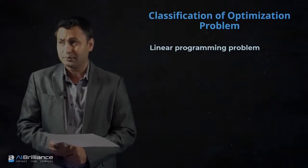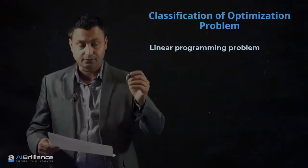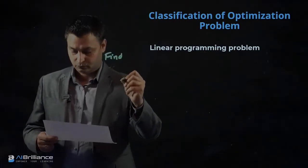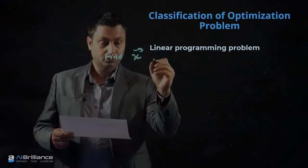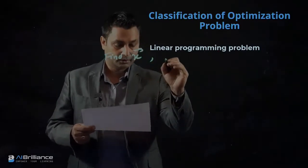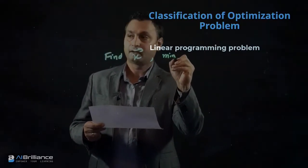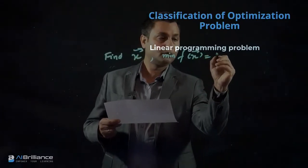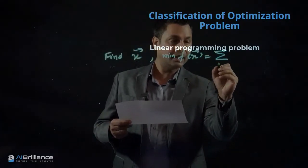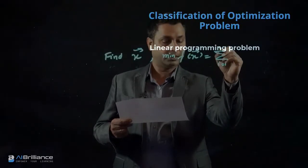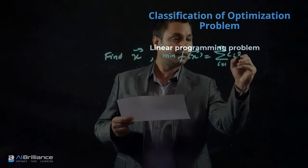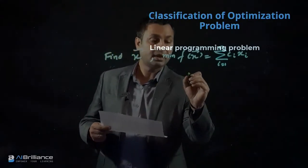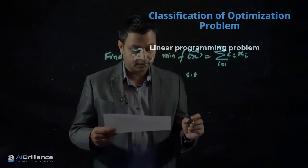If you have a linear programming problem, then essentially what you're trying to do is find x, where you are trying to minimize a function of x, which is written as the sum from i equal to 0 to n of ci times xi. So your coefficients are ci's and xi's, and these are also subject to linear constraints.